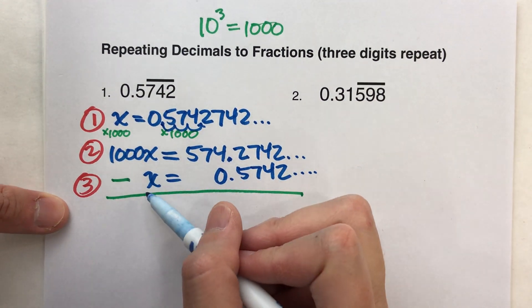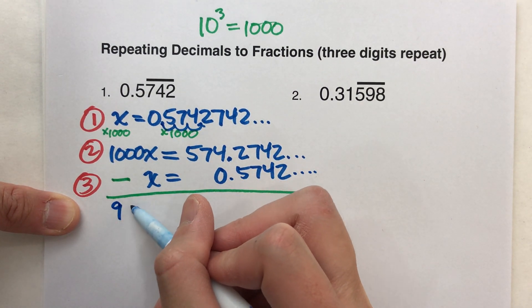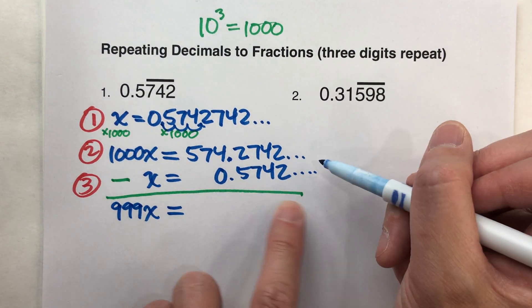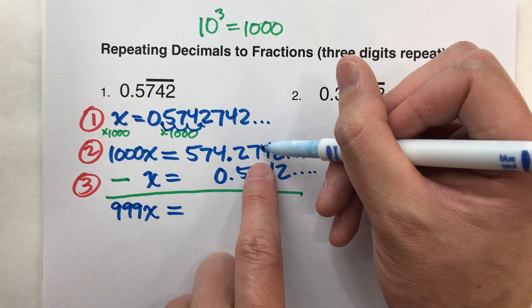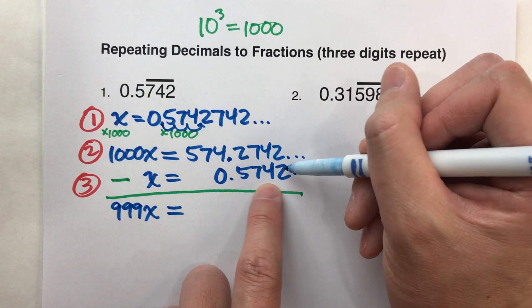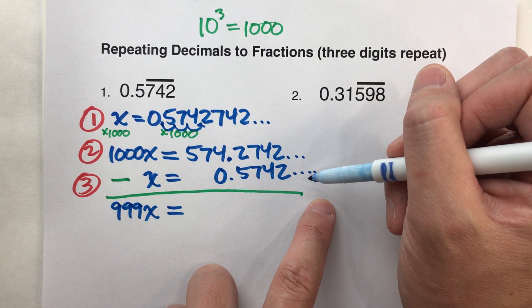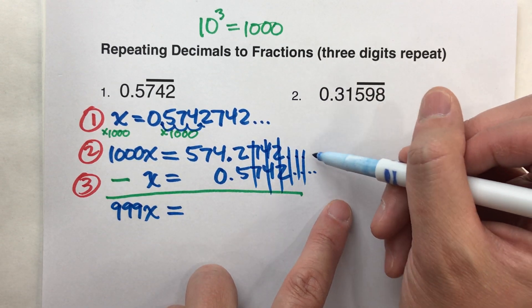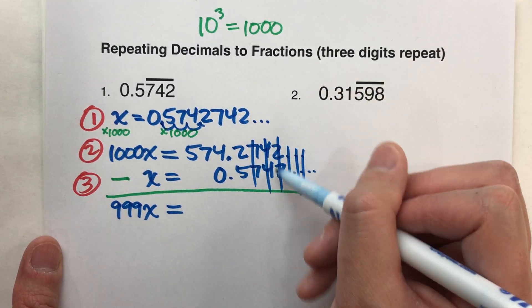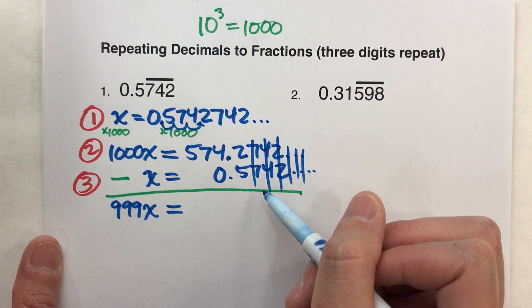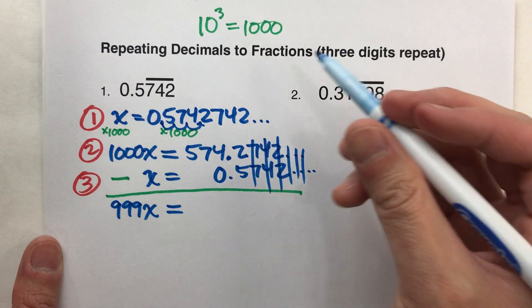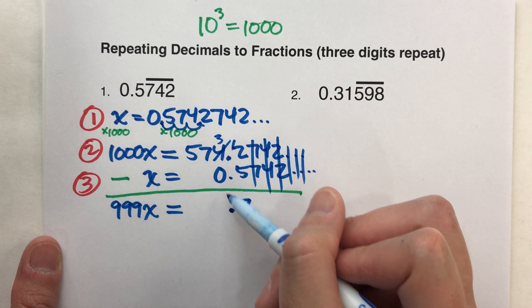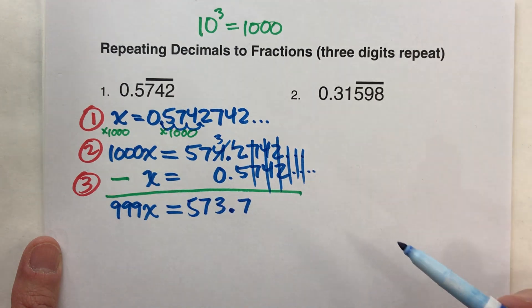Okay. So, when I subtract them, on the left hand side, 1000x minus 1x is 999x, drop down my equals. On the other side, when I subtract these, I'll start on the end, remember the 742's are going to repeat over and over again on top, and they're also repeating on the bottom. So when I subtract them, they're going to go away. Okay, 2 minus 2 is 0, 4 minus 4 is 0, 7 minus 7 is 0, and all the other 742's, 742's are going to get me 0's. So all of these just become 0, and so the first thing I really need to subtract is right here, 2 minus 5, which I can't do, so I need to borrow. There we go. 12 minus 5 is 7, drop down my decimal, 3 minus 0 is 3, and then 7, 5, alright?